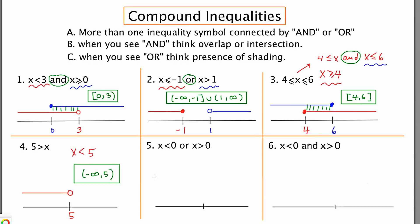The last two examples look very similar except in number 5 the connector is OR and in number 6 the connector is AND. Let's see how that makes a difference, if at all. Number 5: X is less than 0. There's 0 on the number line. X is less than 0, I shade to the left. For the second inequality, X is greater than 0: open circle, shade to the right.